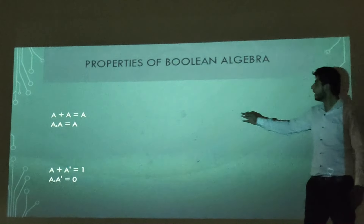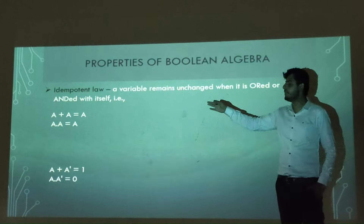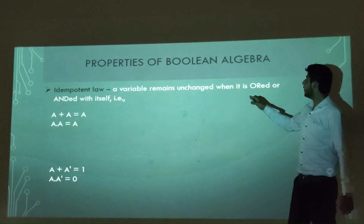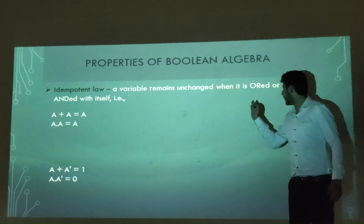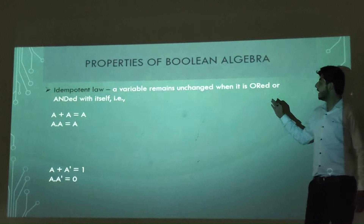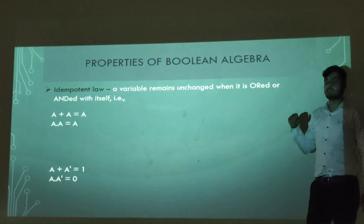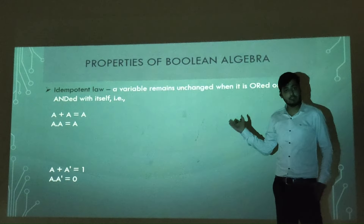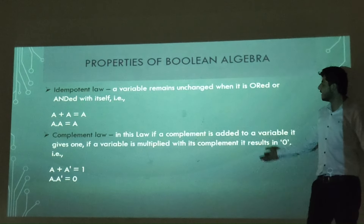The next law is the idempotent law. This law says that the variable remains unchanged when it is ORed or ANDed with itself. As you can see, a dot a equals a and a plus a equals a.